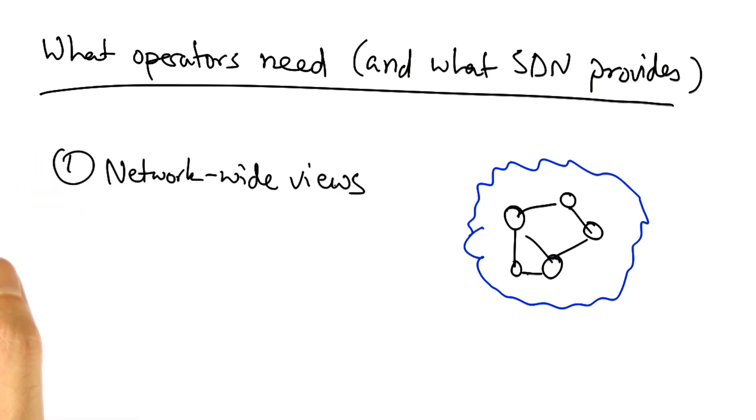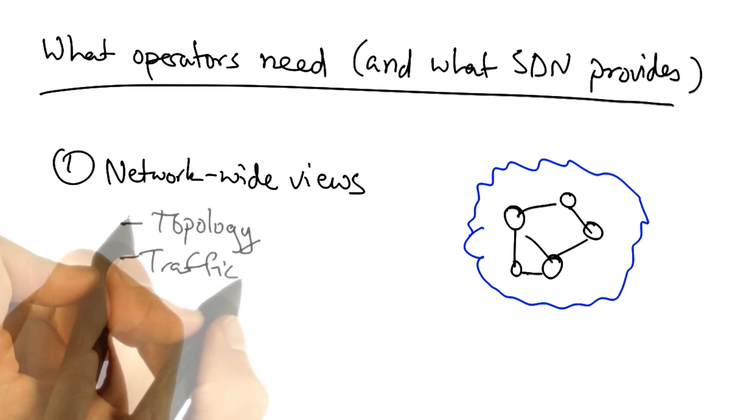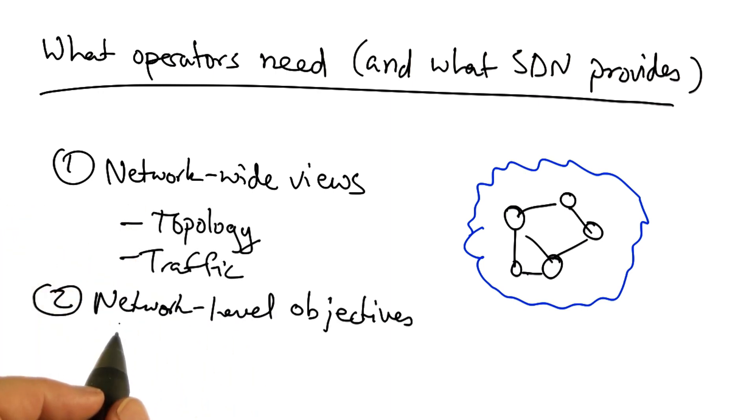The first is network-wide views of both topology and traffic. The second is the ability to satisfy network-level objectives, such as those that we talked about before, including load balance, security, and other high-level goals.